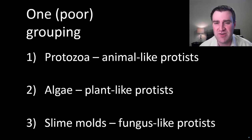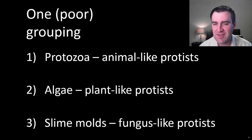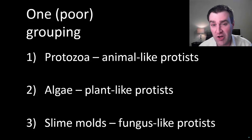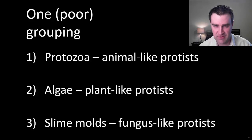One way we can try to subdivide protists is to talk about the animal-like protists, the so-called protozoa; the plant-like protists, algae; and the fungus-like protists, or the slime molds. But even this subdivision isn't something to worry about too much, because when we've looked at the DNA sequences of species within these groups, we find that they're really not closely related at all. Biologists are working on a better way of organizing protists that better reflects the evolutionary history of the groups.